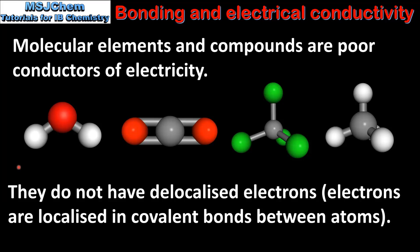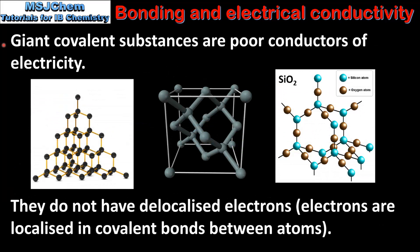Next we look at giant covalent substances. Like molecular compounds, giant covalent substances are poor conductors of electricity. Examples include diamond, silicon, and silicon dioxide. These are poor conductors because they do not have delocalized electrons — the electrons in the structure are localized in covalent bonds between the atoms. However, one exception is graphite, which we'll look at next.